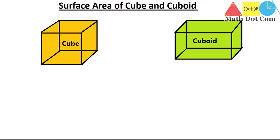Let's count how many faces there are in the cube. There is the top face, the bottom face — that's two — then the third, fourth, fifth, and the front one is the sixth face. So there are a total of six faces in the cube, and all these faces are square-shaped.